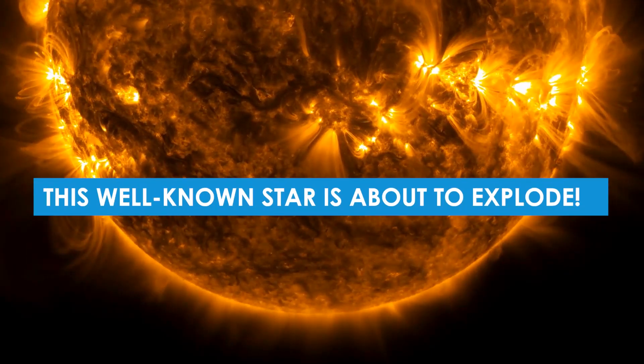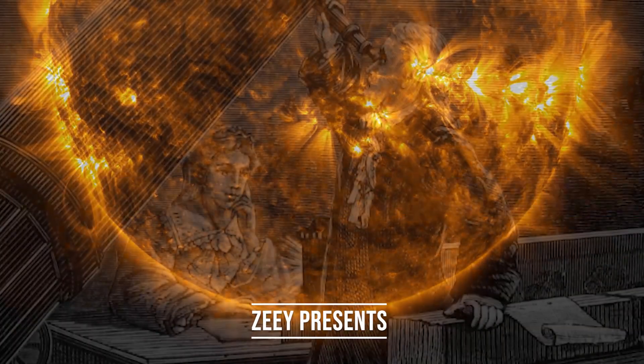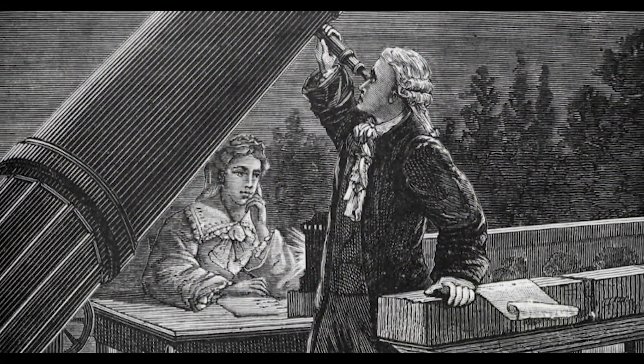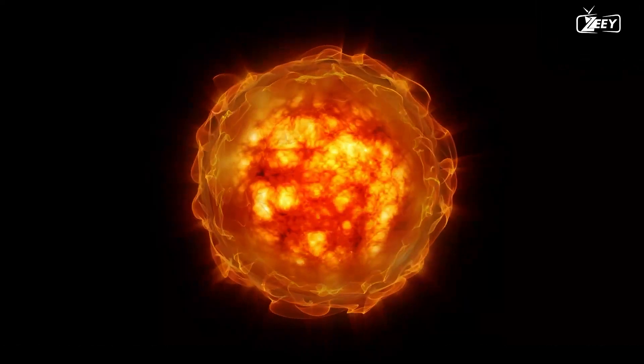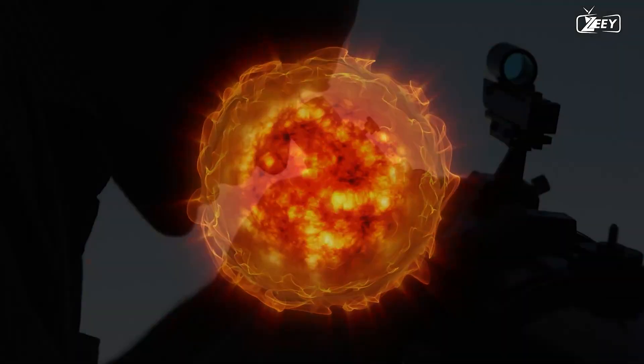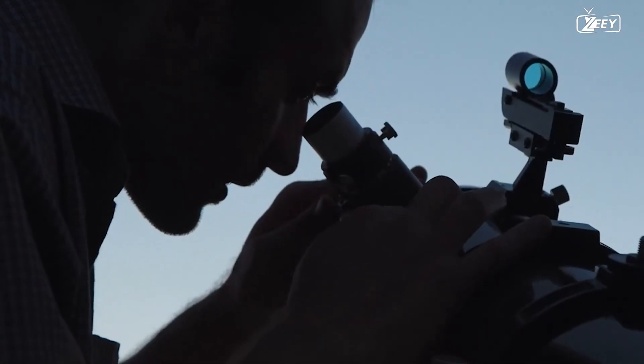This well-known star is about to explode. Astronomer John Herschel was looking through his telescope at the heavens in 1836 when he spotted something peculiar occurring to a star called Betelgeuse. It was modifying its behavior in ways that astounded him.